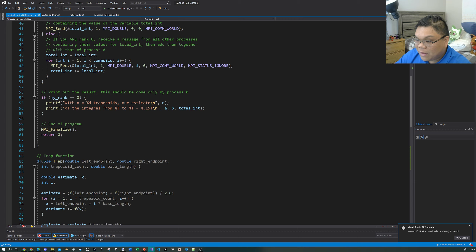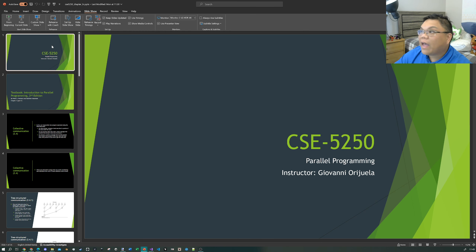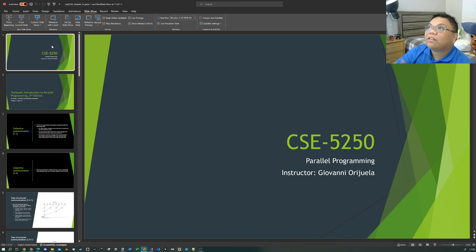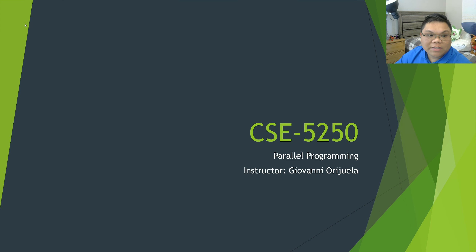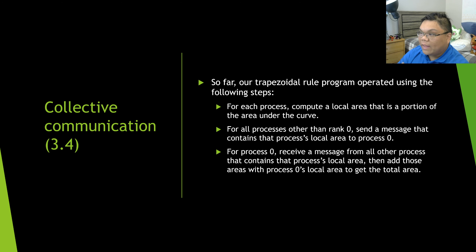For this week, we are looking at a few things to consider regarding how all of these processes send their values to one single process. Our trapezoidal rule program works in the following way: we have a bunch of trapezoids divided among multiple processes. Each process calculates a local area that is the sum of its portion of the trapezoids.